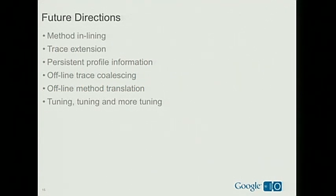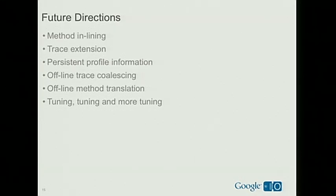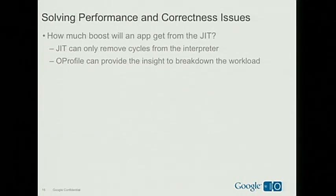This is our first release and we've got some nice plans going forward. The two key optimizations not included in Froyo that we're currently working on are method inlining and trace extension — making traces run more than a couple basic blocks, mostly so we can better identify loops. We're also looking at persistent profile information and offline trace coalescing, which address the case of doing something when your phone is charging and not actively being used. And of course, tuning, tuning, and more tuning. Now I'll turn it over to Ben, who will tell you more about what you can do if you get the JIT sources and build special profile versions.